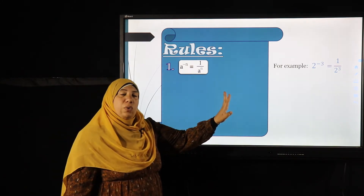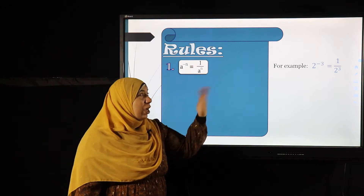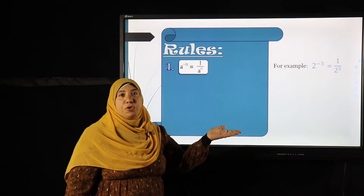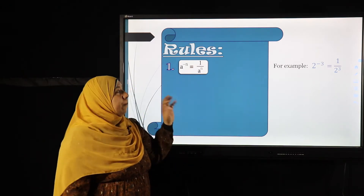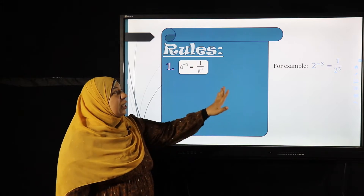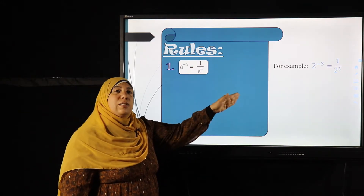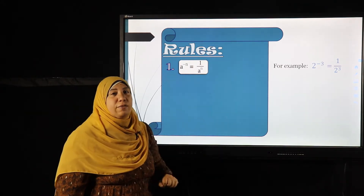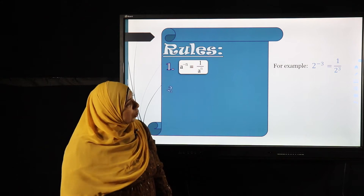You can leave it as one over two to the power three — this is simplest form — or you can find the answer one over eight. But you cannot leave the problem as two to the power negative three; that is not the simplest form.